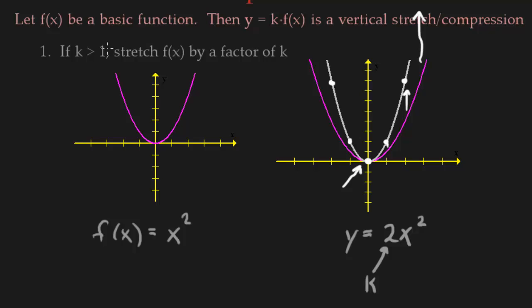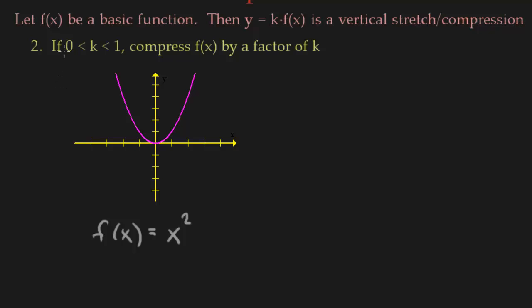So let's see what happens when k is now less than 1. Now, in this second part, k still has to be positive, but now we're less than 1. So we're between 0 and 1, and it's going to be a compression.